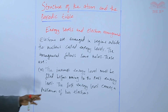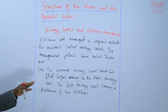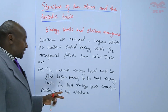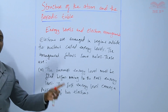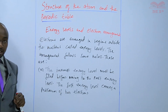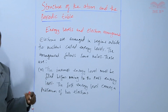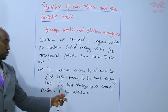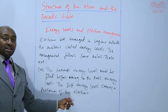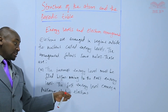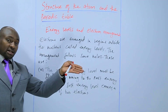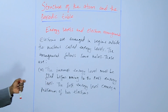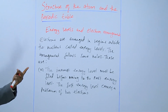The first energy level carries a maximum of two electrons. So if the electrons are three, two will be filled in the first energy level and the remaining one will be pushed to the next energy level. If the electrons are five, two will be put in the first one and the remaining three will be put on the next.